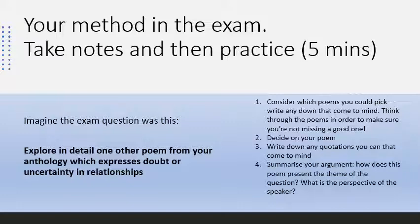Here's the process we go through when looking at the Part B question. Imagine the exam question was: 'Explore in detail one other poem from your anthology which expresses doubt or uncertainty in relationships.' There are four steps. First, consider which poem you would pick — write down any that come to mind. Second, think through the poems to make sure you're not missing a good one. Third, decide which poem you'll write about. Fourth, write down any quotations that come to mind, then summarise your argument: how does this poem present the theme, and what is the perspective of the speaker?